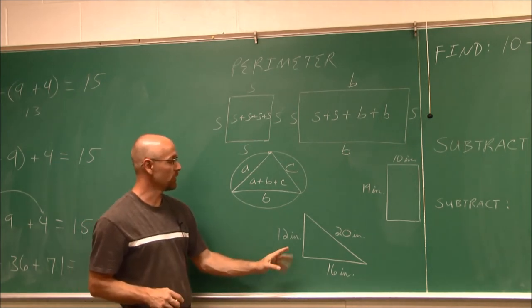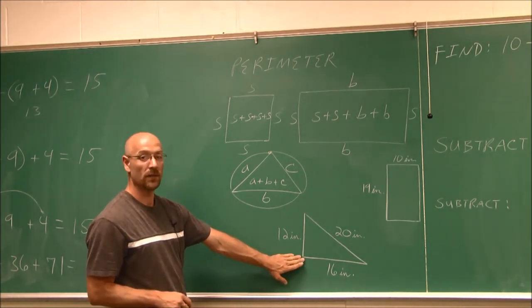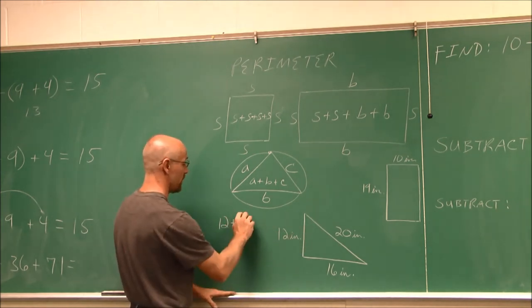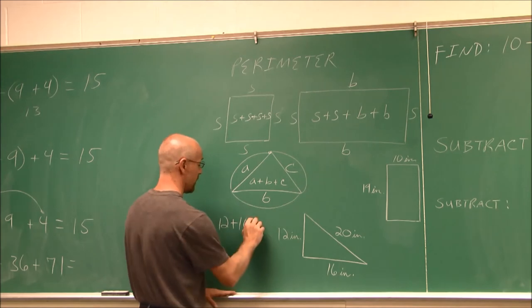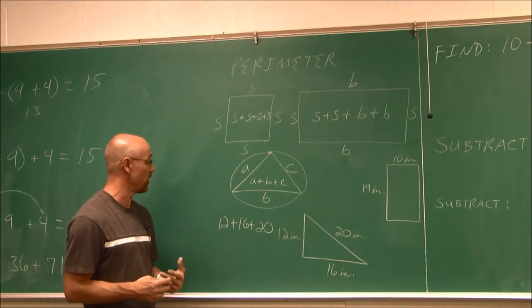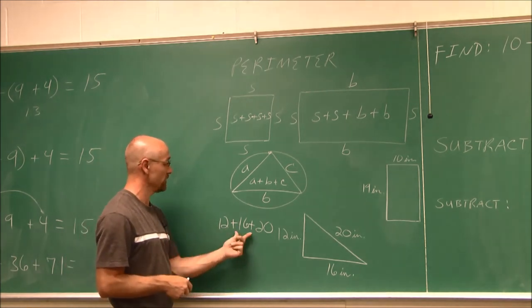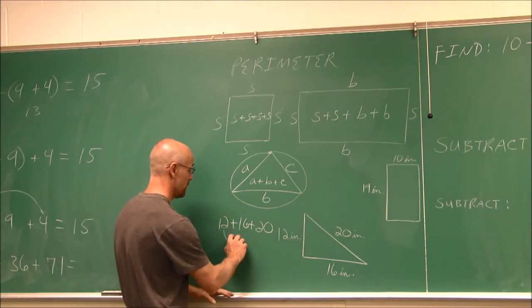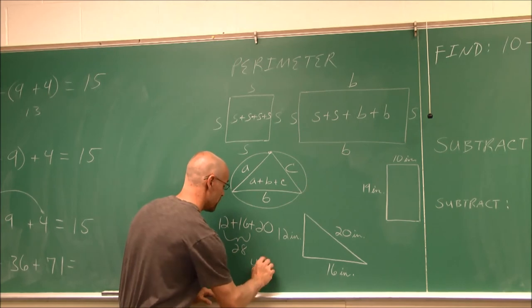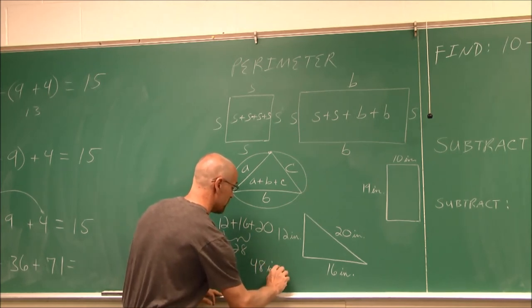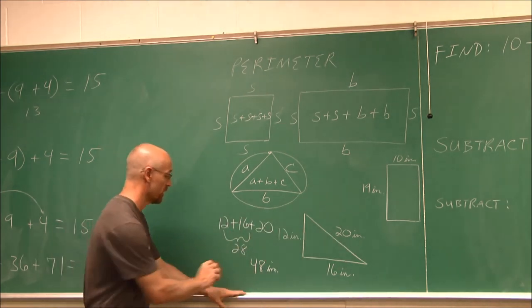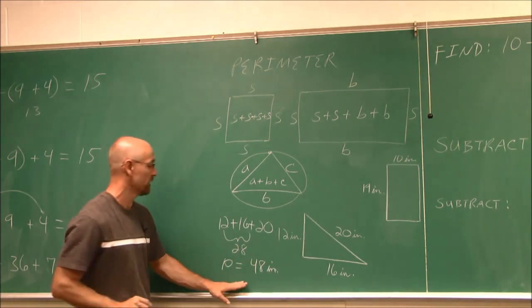So let's do a little practice here. Let's find the perimeter of this triangle. 12 is this side, plus 16, which is this side, plus 20, which is that side. And now I can add it in any order I want. I'm going to say 12 and 16 is 28. And then I'm going to add 28 to 20, which gives me 48. And then I'm going to be sure to use units, because this indicates inches. So my perimeter, and I'll say p for perimeter, is 48 inches.